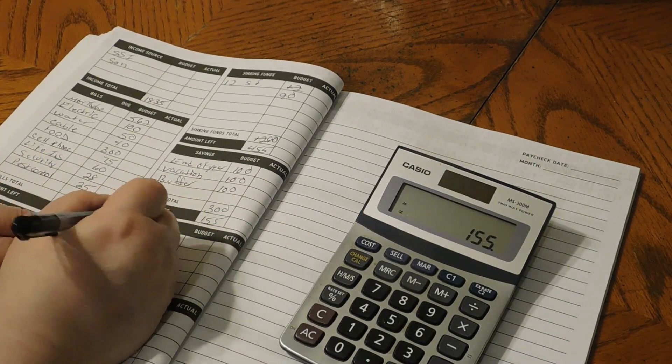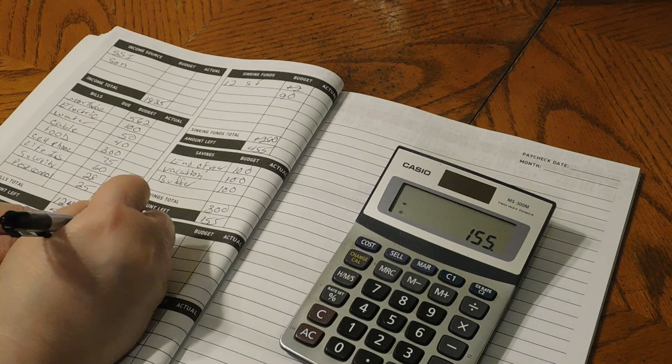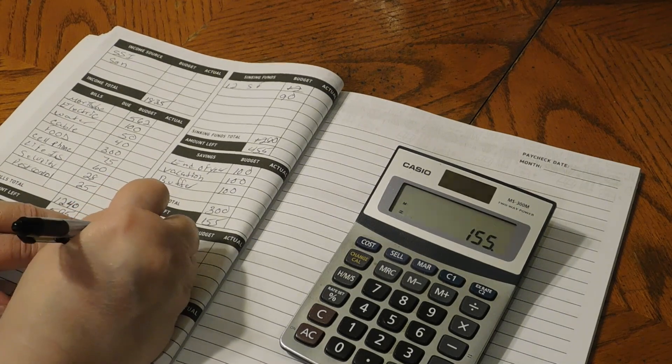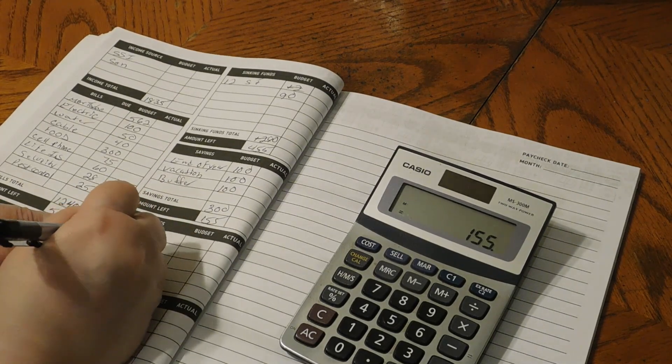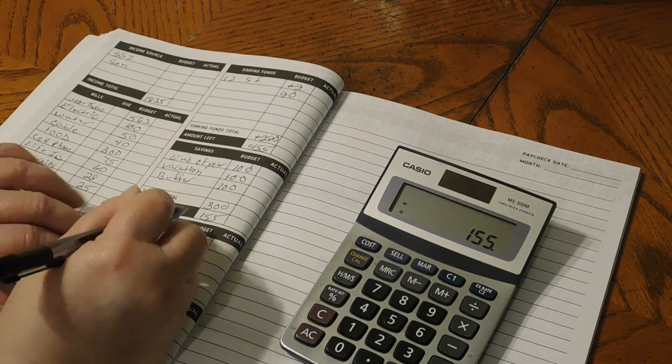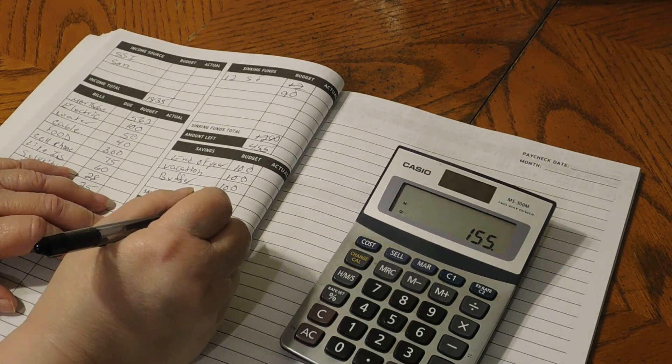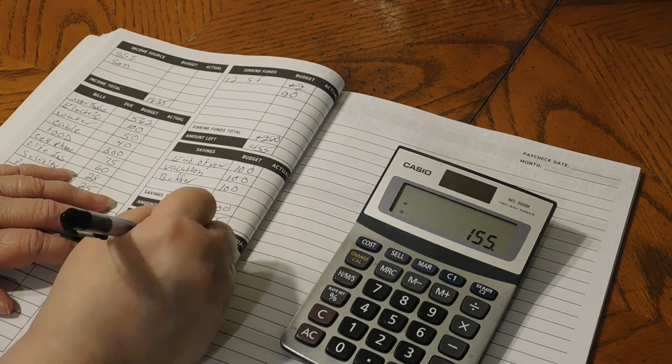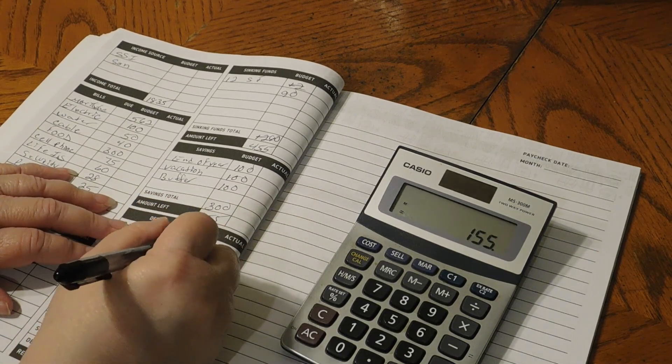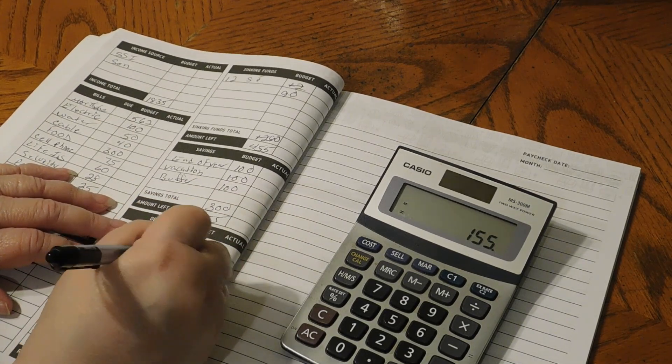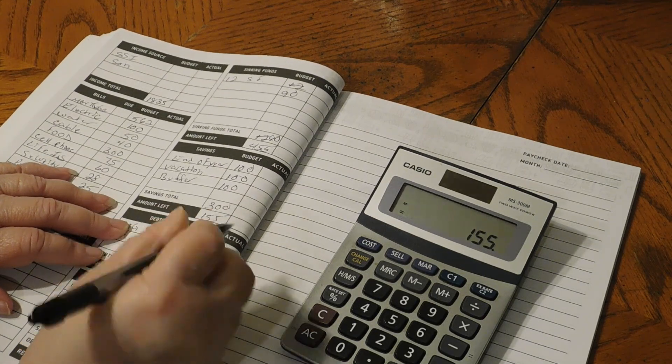Down here, we have our big emergency fund and we have our mini emergency fund. Each one of those, the big emergency fund is going to get $20 and the mini is going to get $15.